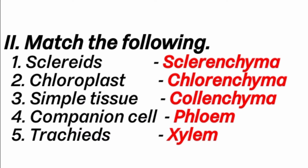Third question: Simple tissue. Answer is Collenchyma. Three types of simple tissues are there: Parenchyma, Collenchyma, and Sclerenchyma. Fourth question: Companion cell. Answer is Phloem. Fifth question: Tracheids. Answer is Xylem. Phloem consists of companion cells, and xylem consists of tracheids.